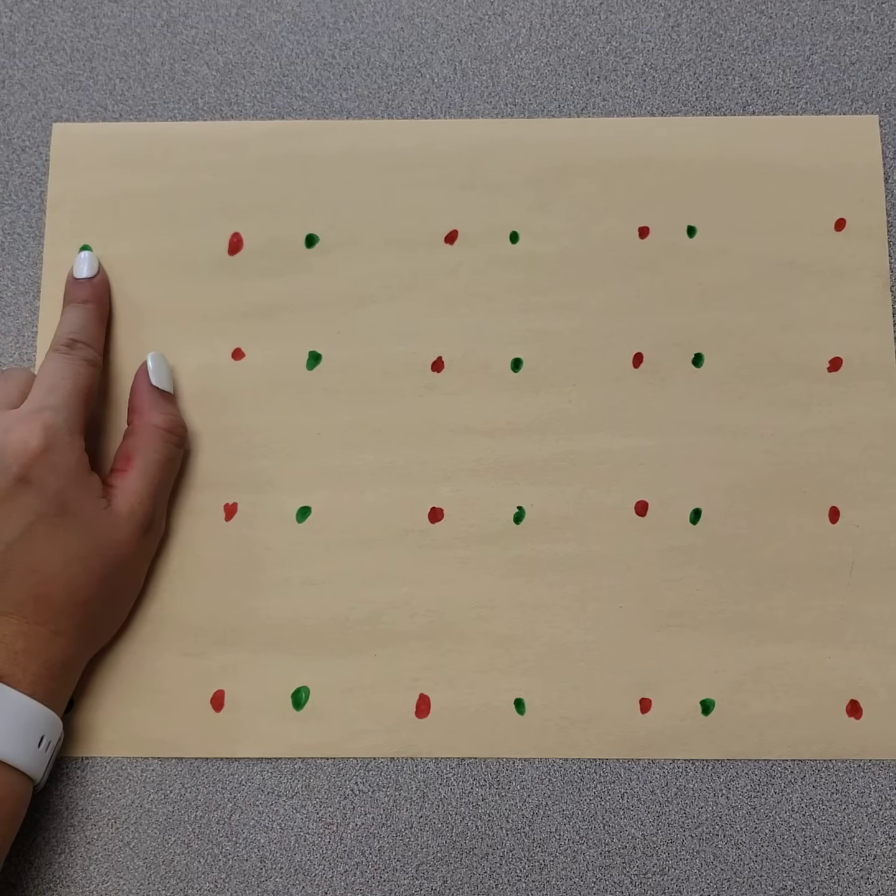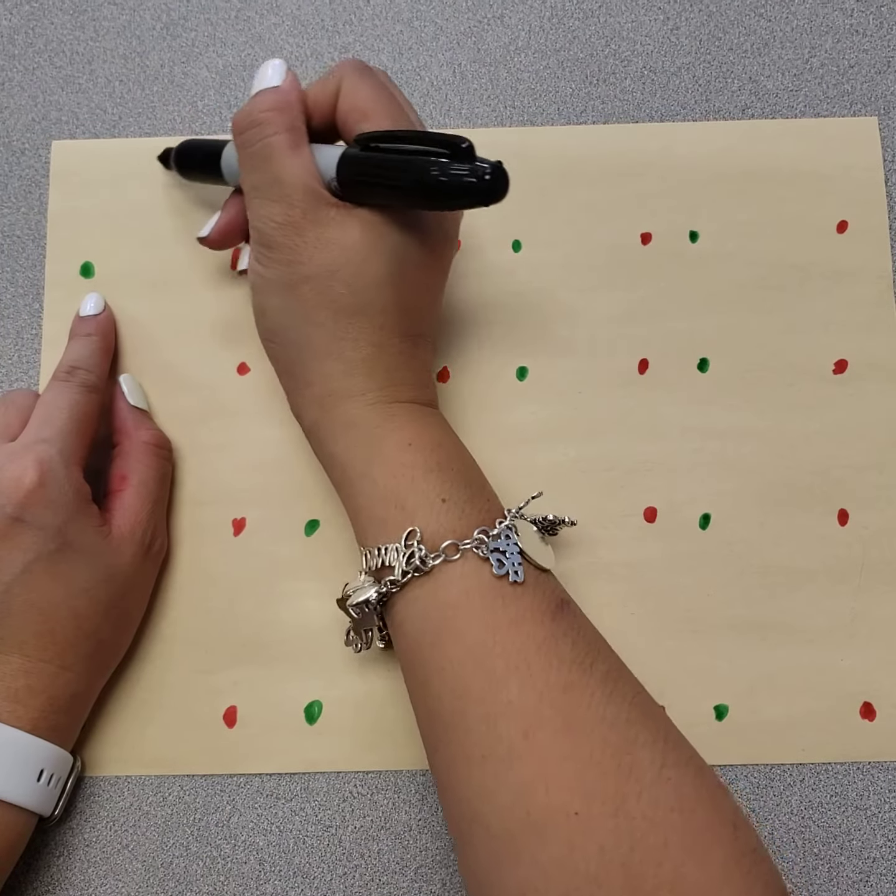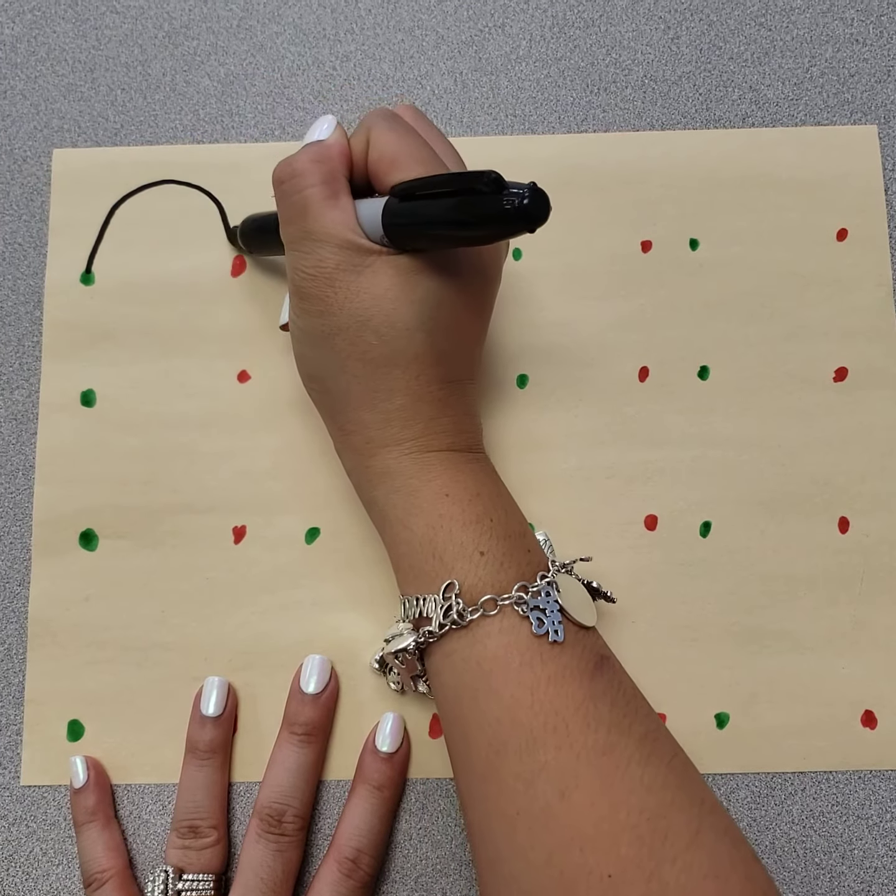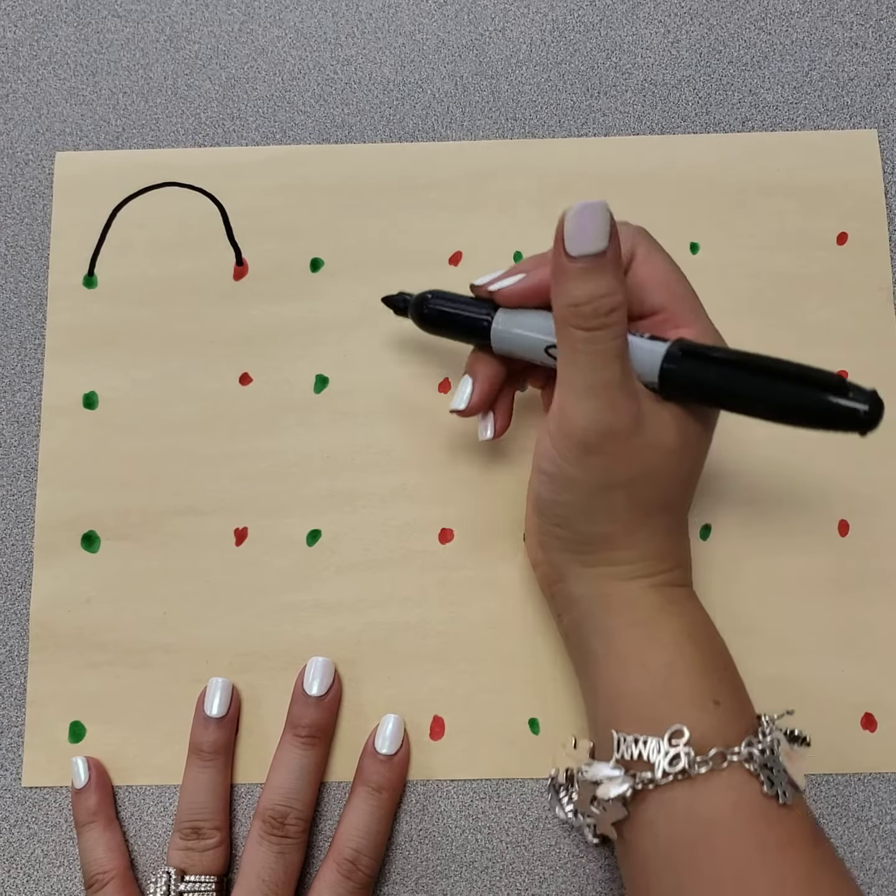So you're going to start at the green here. It's going to curve on over to the red. Start green, curve to the red. Try that again.